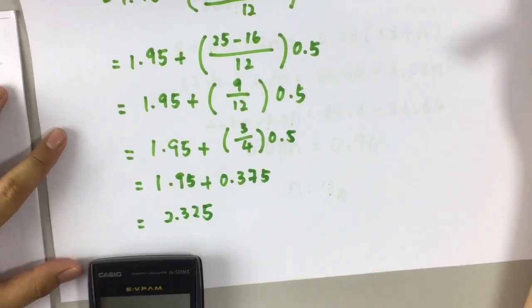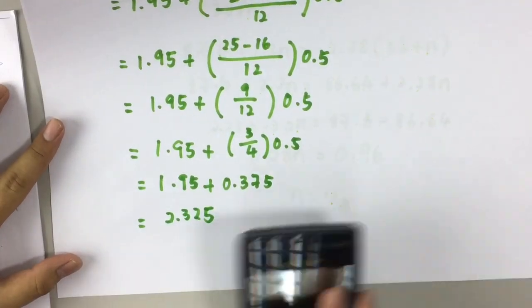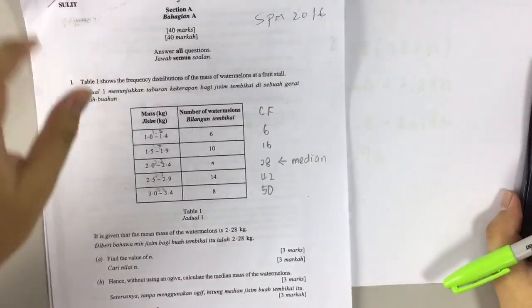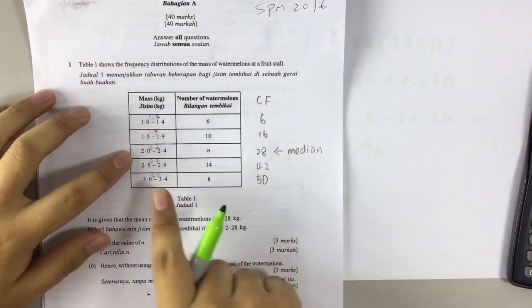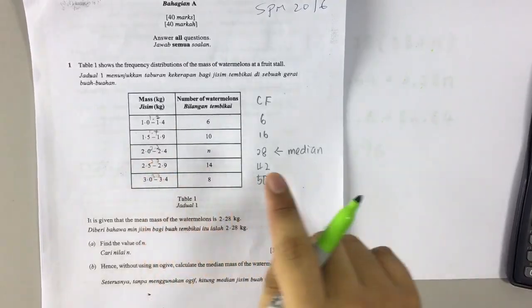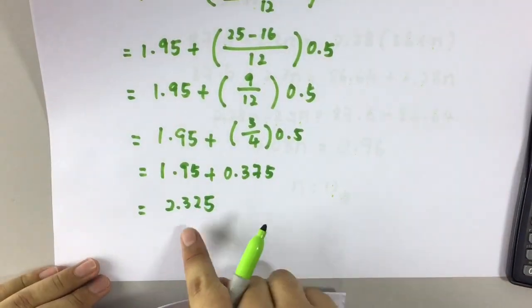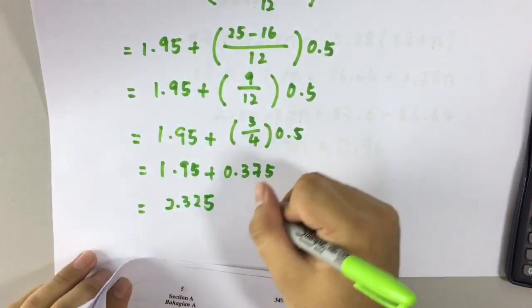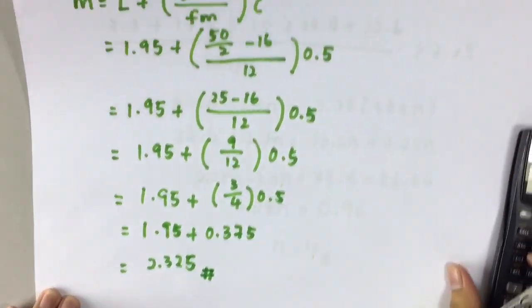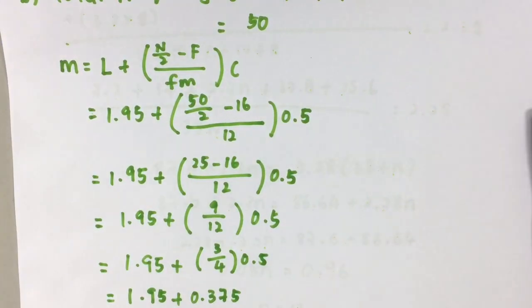Now, is this the correct answer? We can check it here. Since we determined the median lies here, which means our answer should be in between 2 to 2.4. Yes, it is in between 2 to 2.4. So this is our answer. Hope you understand. Thank you.